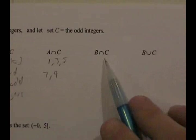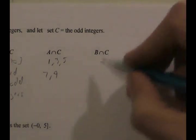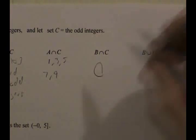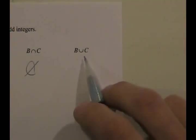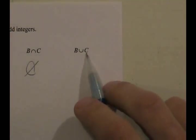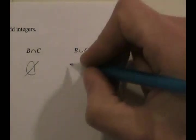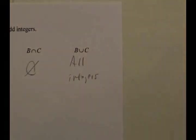B intersect C: since B is the set of even integers and C is the set of odd integers, they don't have any elements in common, so their intersection is the empty set — no overlap. B union C is anything that's an even integer or an odd integer, so this would be all integers.